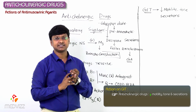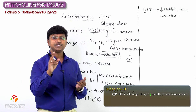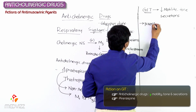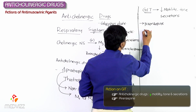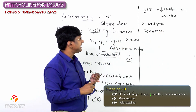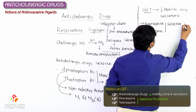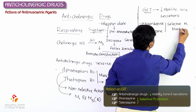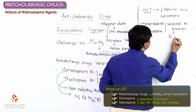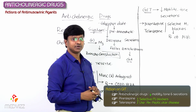In case of peptic ulcer disease, we want the HCl secretion to be reduced. We have two important drugs used in the treatment of peptic ulcer disease: pirenzepine and telenzepine. These — pirenzepine and telenzepine — are selective M1 blockers which are used in the treatment of peptic ulcer disease.